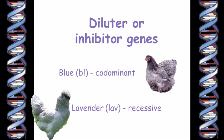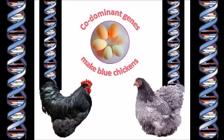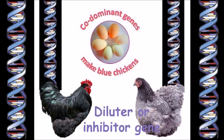We talked a bit about the dilution effect of the blue gene in my video about the genetics of blue colored chickens. The blue gene is actually an inhibitor gene which inhibits the production of eumelanin so that the black color is diluted to gray. The blue gene only works to make blue or splash if the feather would otherwise have the black eumelanin color — it doesn't work on pheomelanin, only on eumelanin.